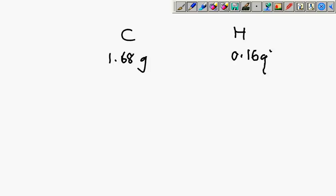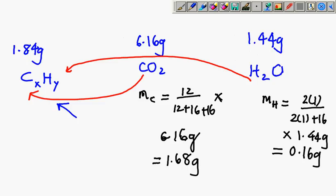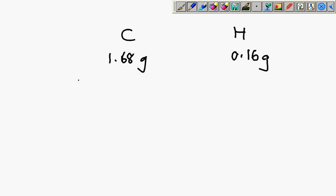You'll realize that the previous information of the mass of the hydrocarbon - the 1.84 grams - is not really that important. Now, first step we have done: we listed out the mass. Second step, we need to find the moles, so the mole is 1.68 divided by 12. This will give me 0.14 moles.